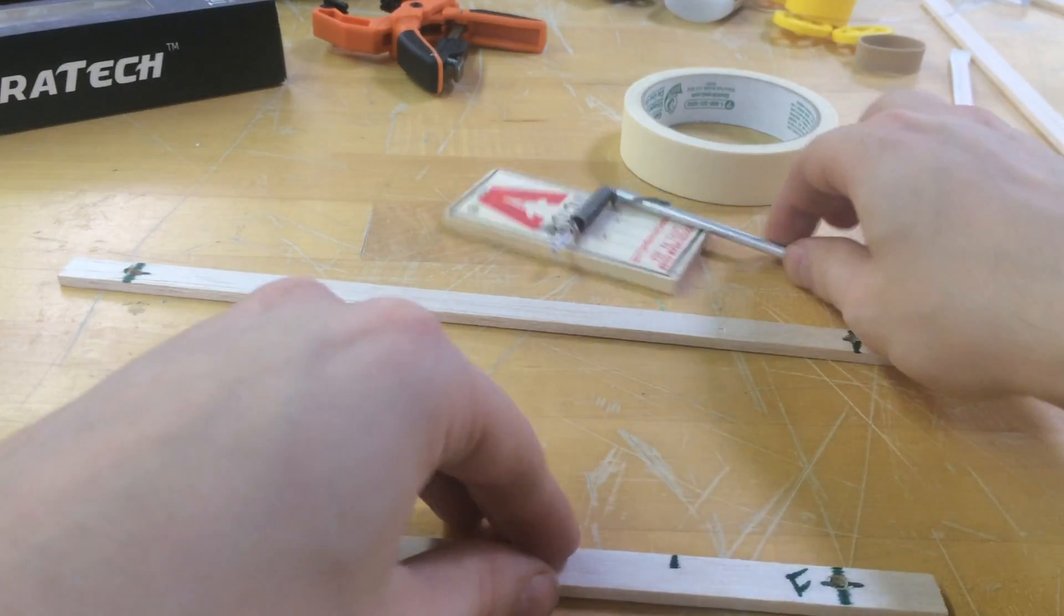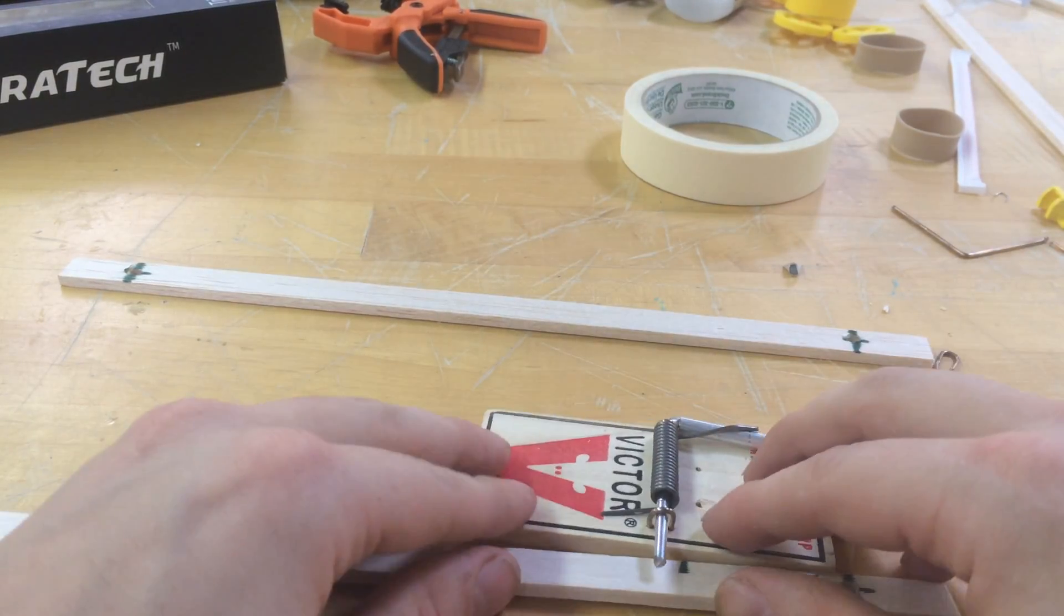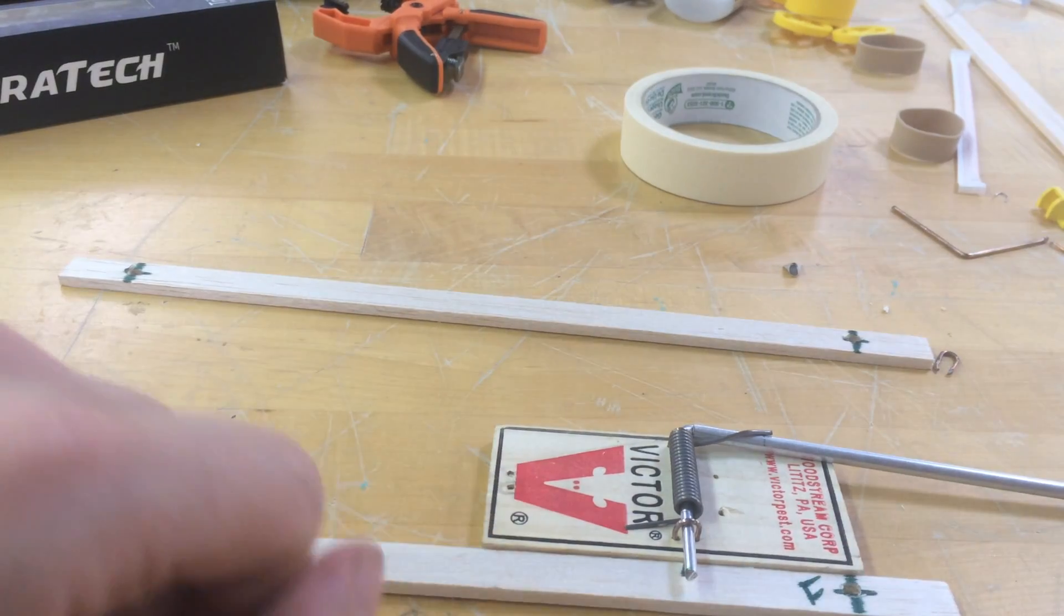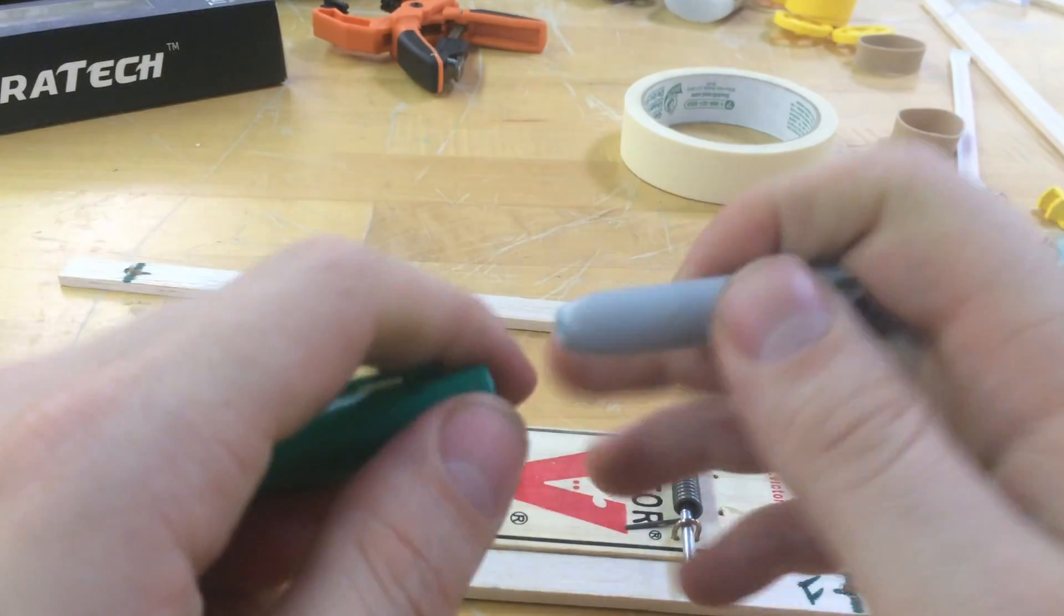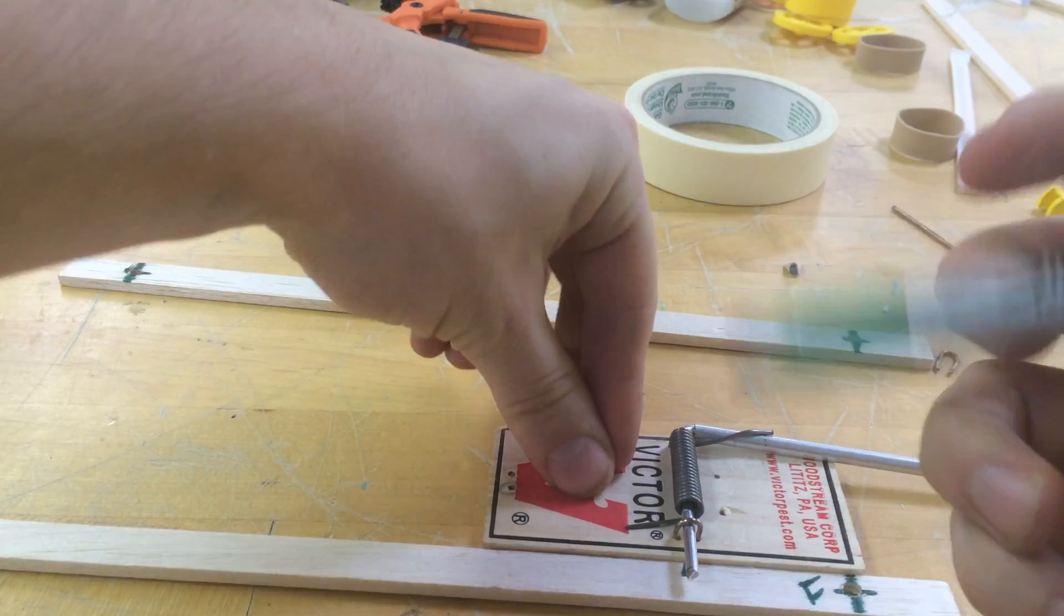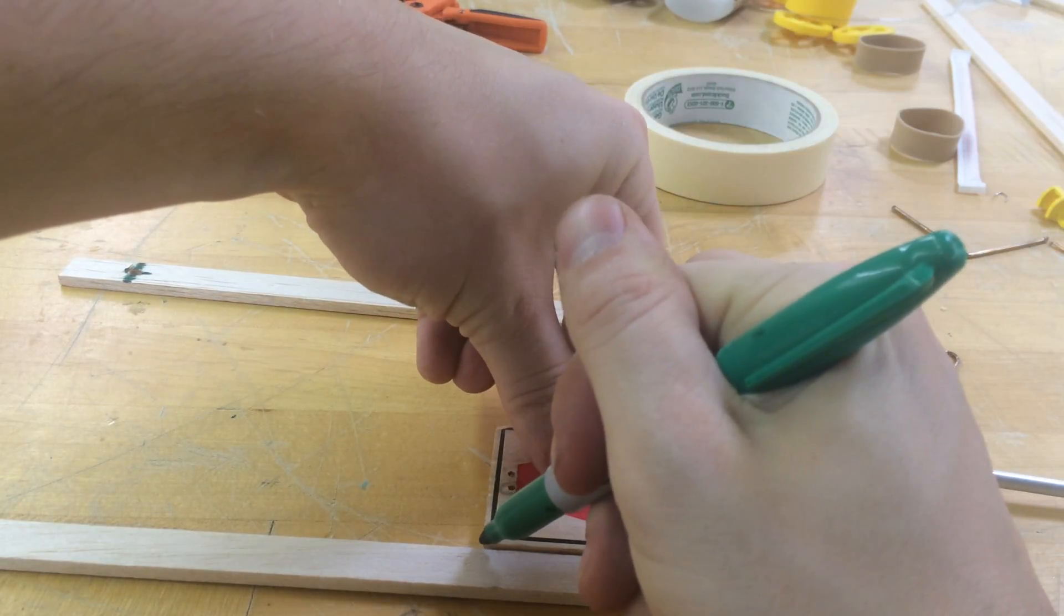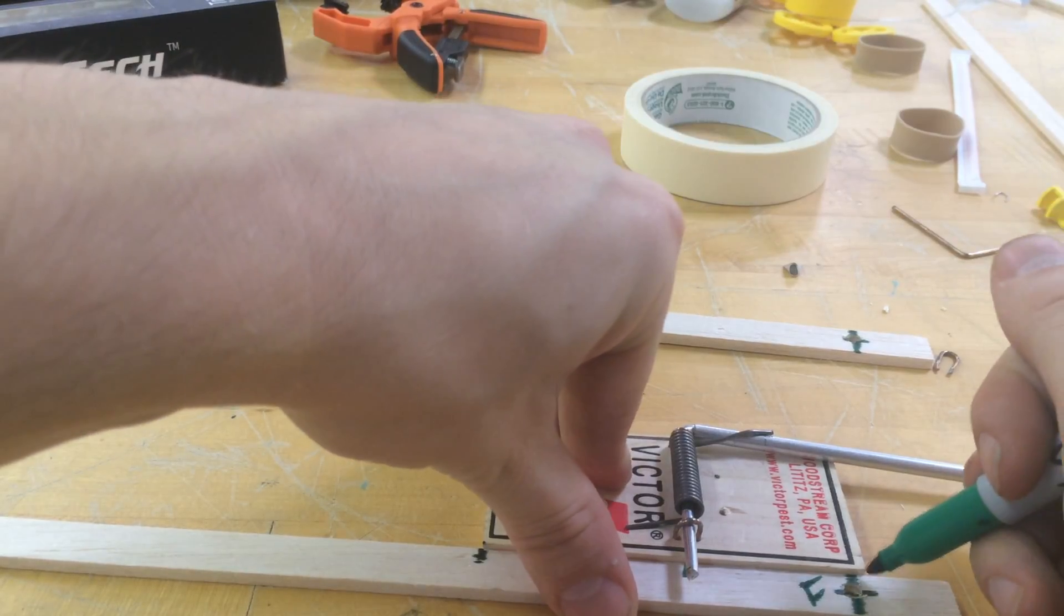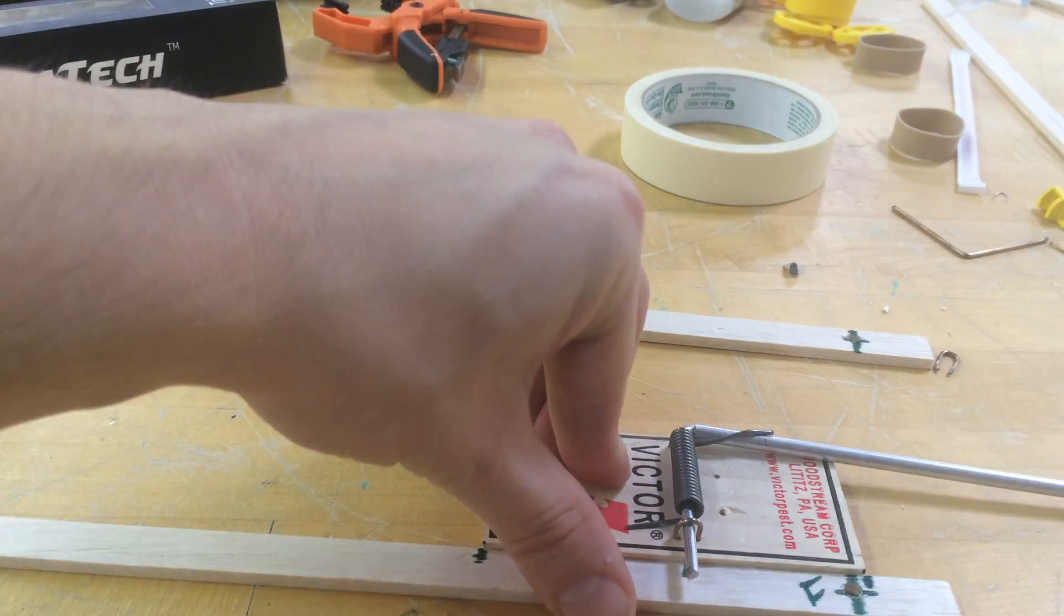Now that that lines up directly with my rear axle, I can actually take my mousetrap, line it up, so I can make my marks on where it's going to sit. So I'm going to line this up on the back end, mark the back end. I'm going to line this up on the front end, mark the front end.